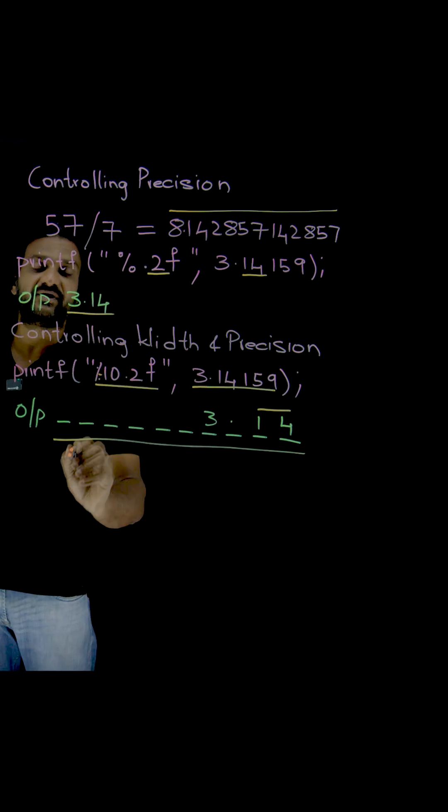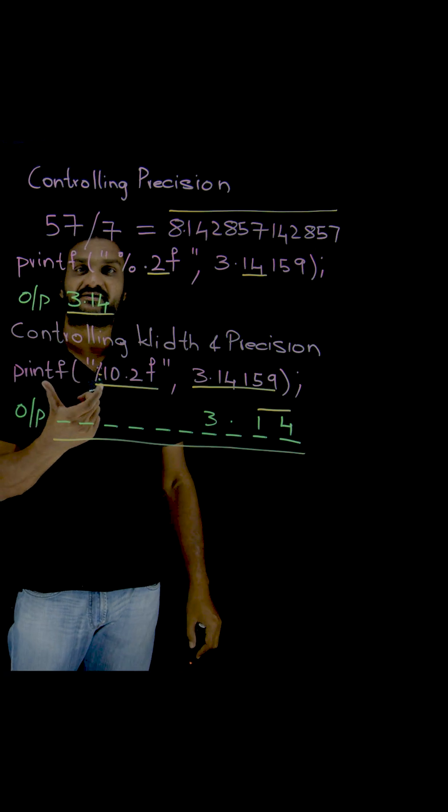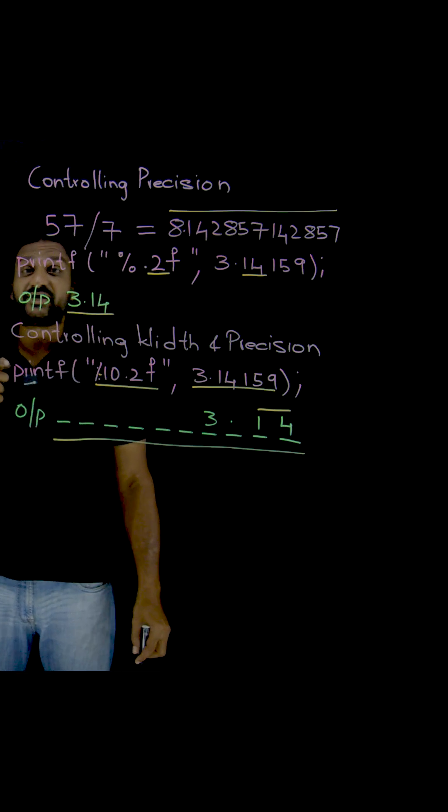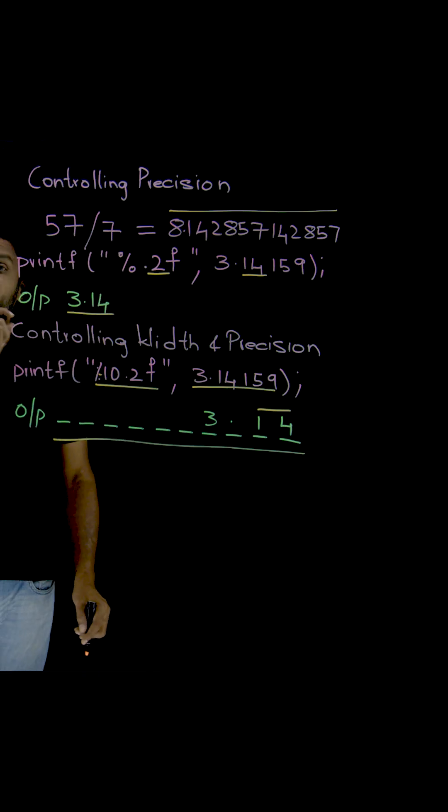What if I want the same output to be left aligned? All you need to do is give a minus symbol. It is a flag. By that, we can control both the width and the precision.